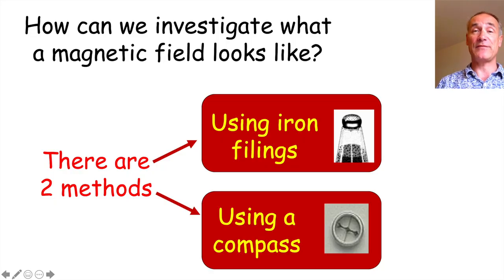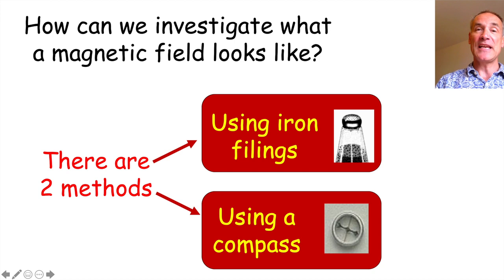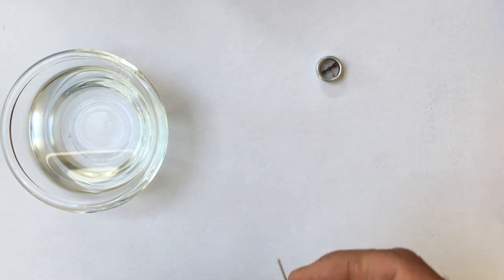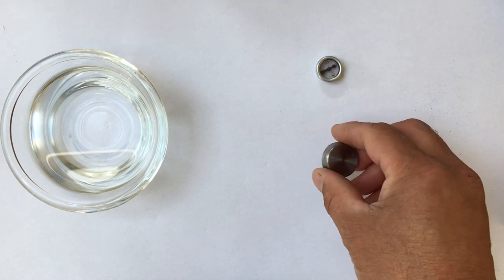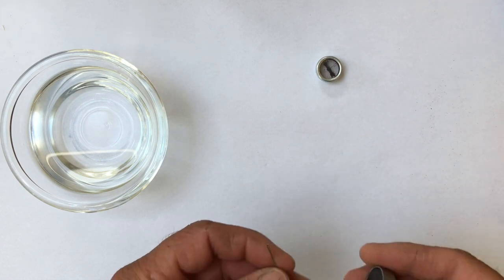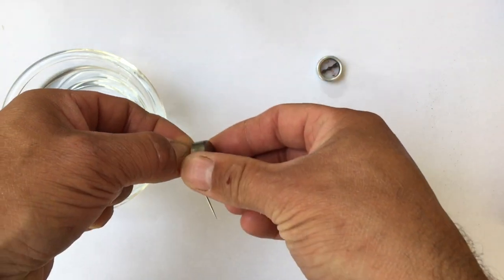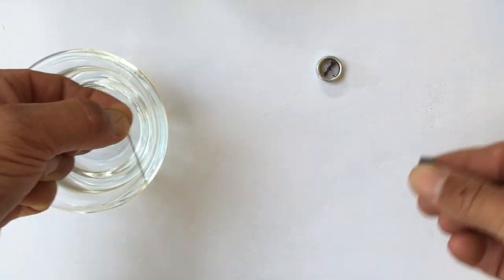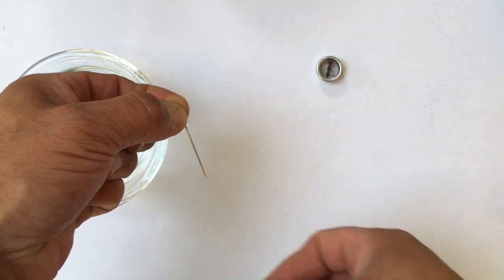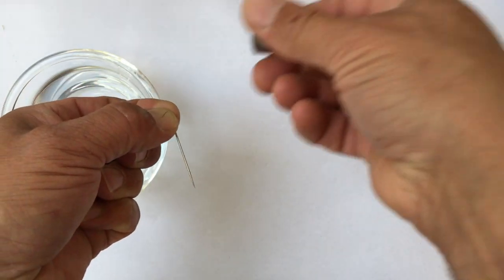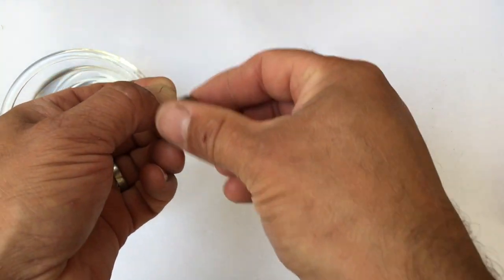That was the first way of investigating magnetic fields, but it doesn't show the direction in which the magnetic field goes — like we had when we dropped the cow. So to do that we have to use a compass. So first of all what is a compass? I've got a normal compass just to check, a bowl of water, a needle, and a fridge magnet. To make the needle magnetic and turn it into a compass needle, you need to stroke it with the magnet over and over again, making sure you move the magnet out of the way when you go back. You need to do it lots of times to make that needle as strong a magnet as possible.